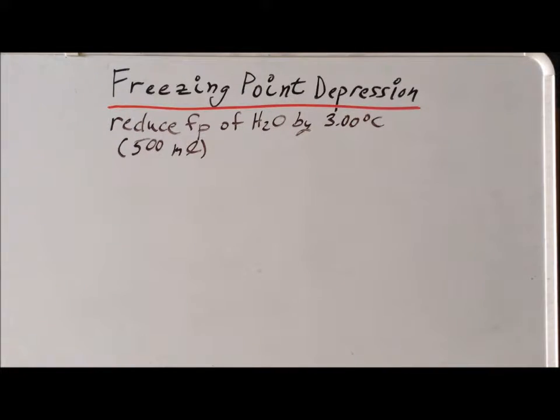In this particular example, we're going to look at the problem from a slightly different angle. What we're going to do is we have a volume of water, 500 milliliters, and what we want to do is reduce the freezing point by exactly three degrees. Therefore, we want the new freezing point to be minus three degrees centigrade.